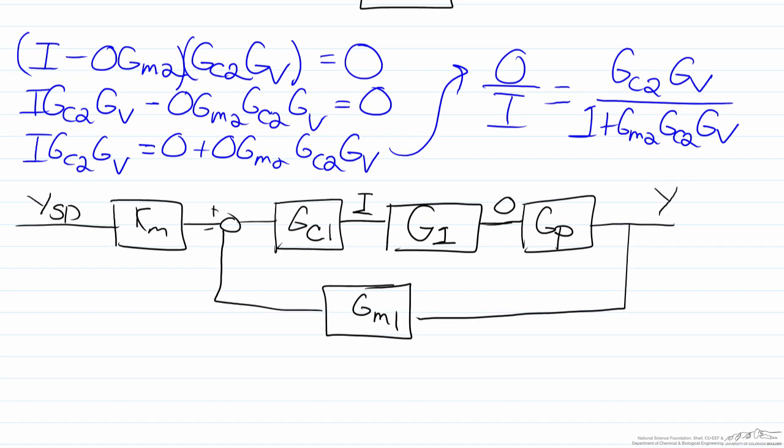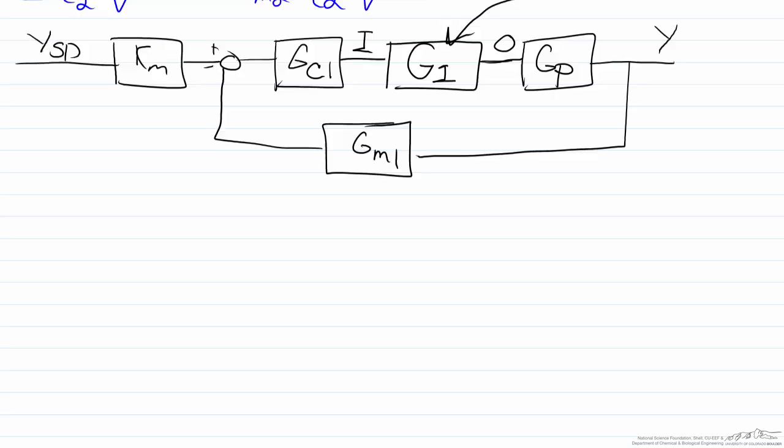What we can now do is block diagram algebra again. Just a note that G1 is this transfer function of Gc2 Gv over 1 plus Gm2 Gc2 Gv. So when we do this block diagram algebra it is actually very similar to what we just did.